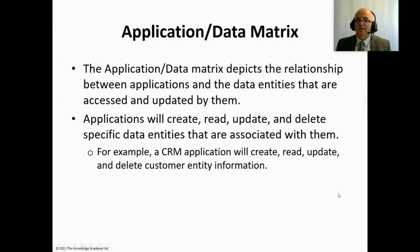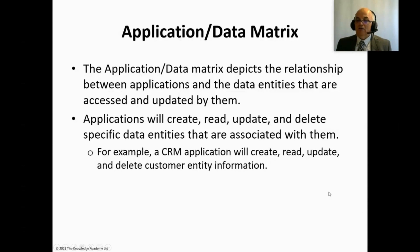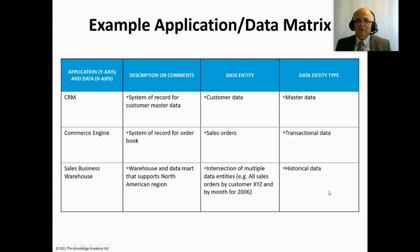The application data matrix depicts the relationships between applications and the data entities that are accessed and updated by them. Applications will create, read, update, and delete specific data entities associated with them. For example, a CRM application will create, read, update, and delete customer entity information. And it could look a bit like that — that's what you might see in an application data matrix.